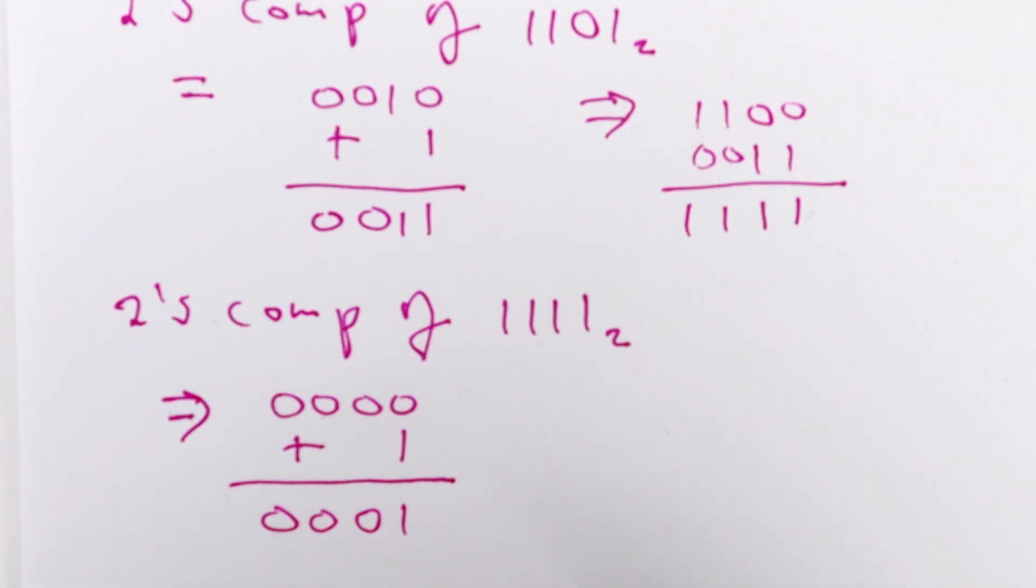After that you just invert the sign. So we write it as negative 0001 base 2.